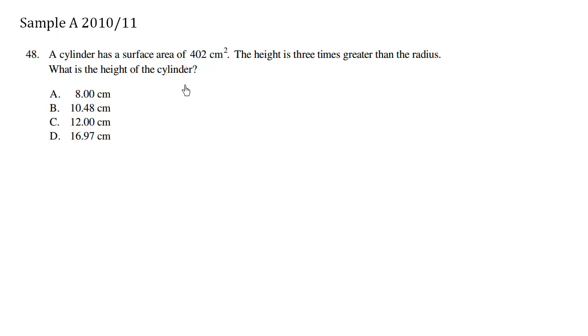A cylinder has a surface area of 402 centimeters squared. The height is three times greater than the radius. What is the height of the cylinder?